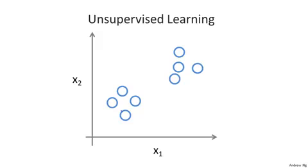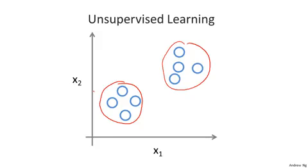Given this dataset, an unsupervised learning algorithm might decide that the data lives in two different clusters. So there's one cluster and there's a different cluster, and the unsupervised learning algorithm may break this data into these two separate clusters. This is called a clustering algorithm and this turns out to be used in many places.